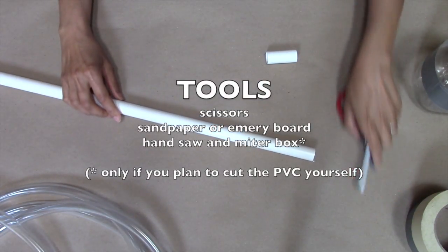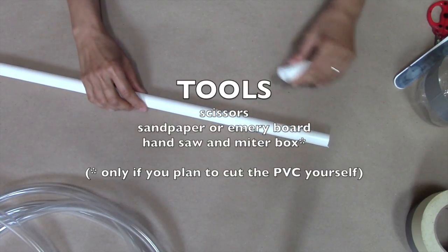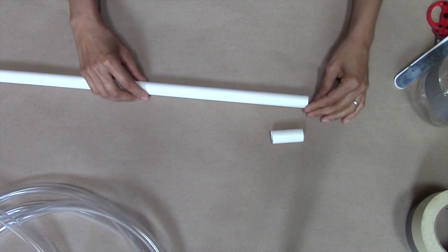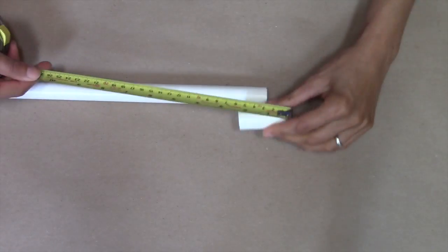You may also need some scissors and sandpaper or an emery board and a hand saw and miter box, but only if you'll be cutting the PVC pieces at home.